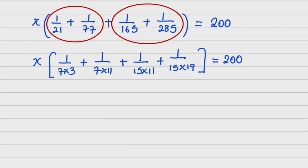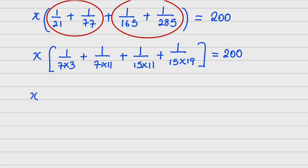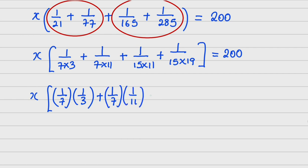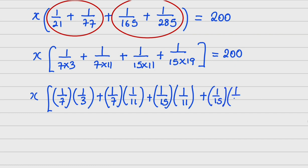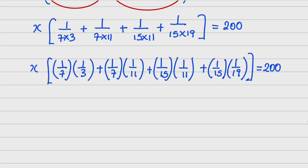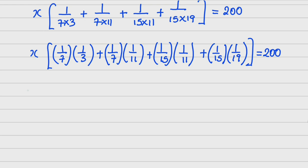Now I can rewrite this as: 1/7 × 1/3, plus 1/7 × 1/11, plus 1/15 × 1/11, plus 1/15 × 1/19, all equals 200. Please don't lose focus — just watch and see what I'm going to do.